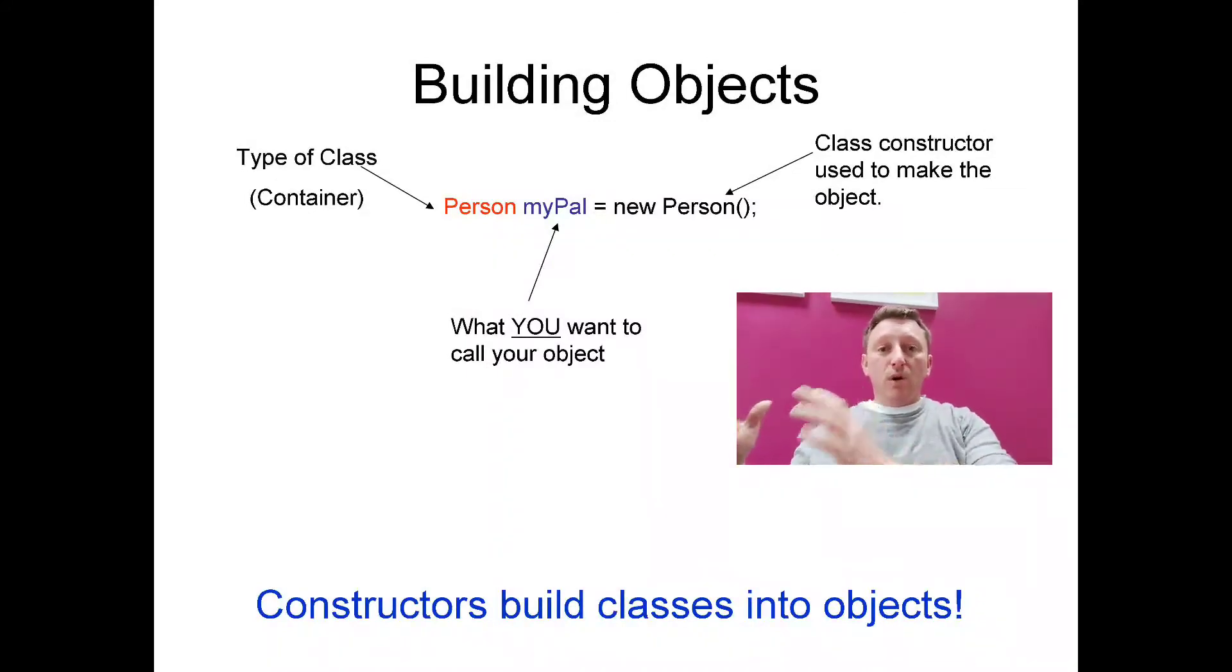So left-hand side, what you're making, what you want to call it. On the right-hand side, the constructor that you choose to make it, which is often the same name because a person constructor makes a person. So I hope that makes sense. After it goes through the construction process of new person, you will have an object of type person and it will be called my pal. And that is the basic structure of how we make objects.